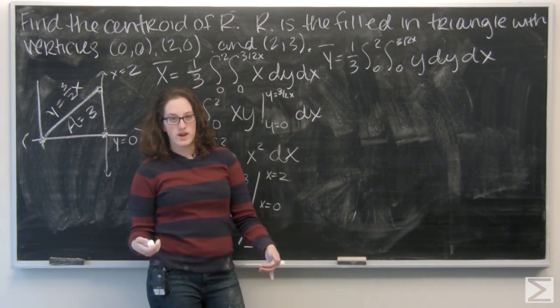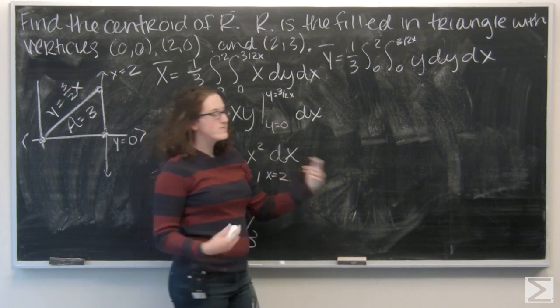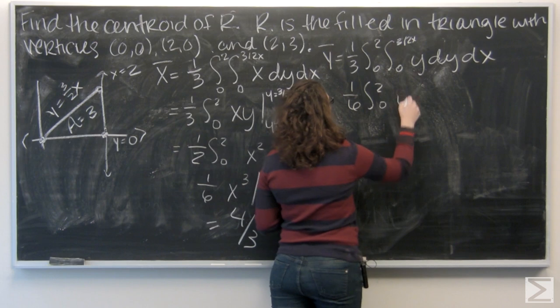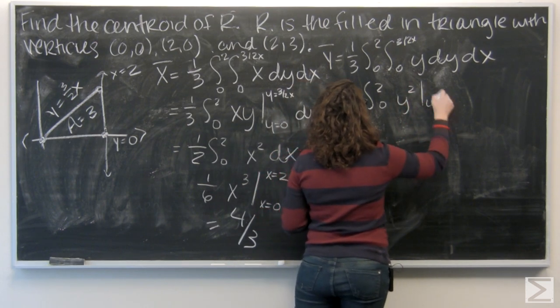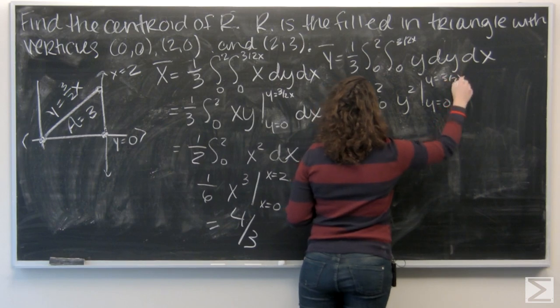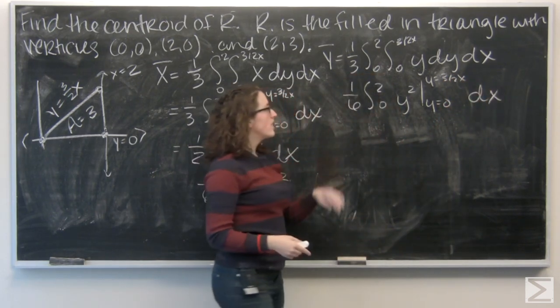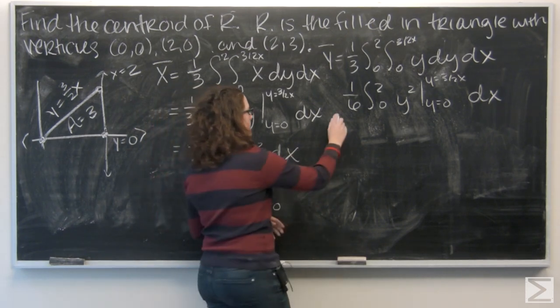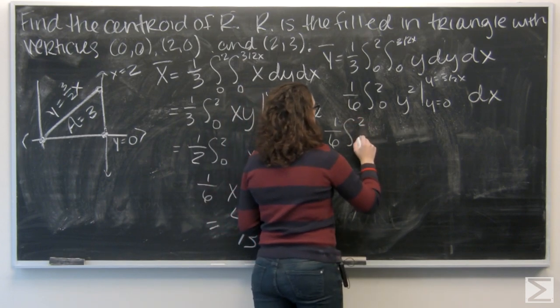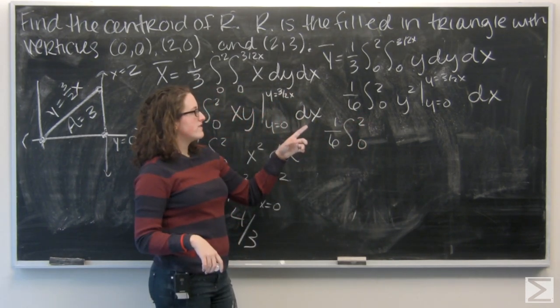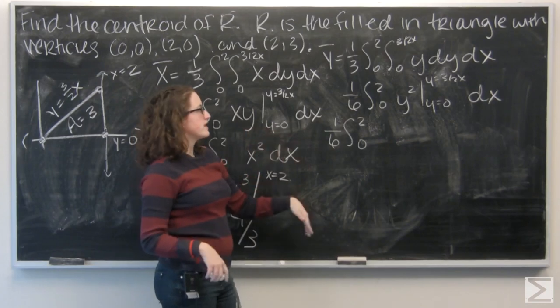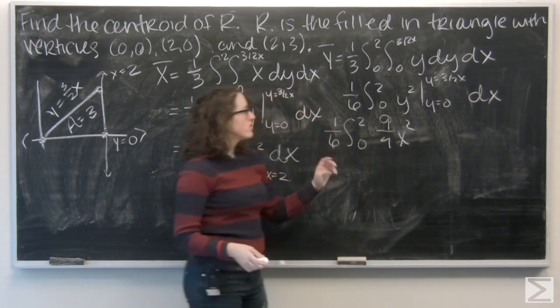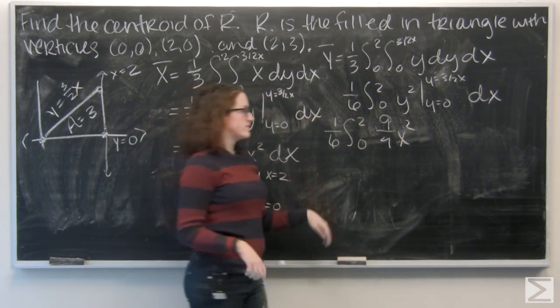The integral of y is going to be 1 half y squared. I'm going to go and pull that 1 half out front. Give me a 1 sixth. So, now I'm going to evaluate y squared from y equals 0 to y equals 3 half x. Well, y equals 3 half x squared is going to give me 9 over 4 x squared. And then, 0 squared is going to give me 0.